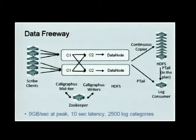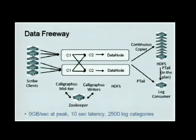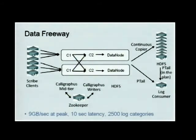The Data Freeway solution, which we developed around the middle of last year, has a basic idea: instead of manually managing the configurations, we use ZooKeeper to distribute those categories into the different writers. Currently we handle about 9 gigabytes per second of throughput at peak, with end-to-end latency less than 10 seconds, and we have about 2,500 categories — it's a pretty large scale.